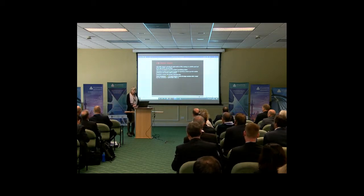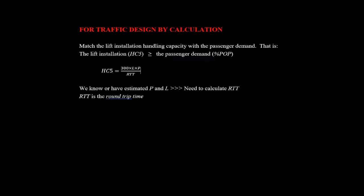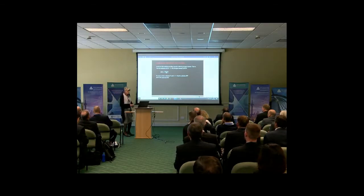As technical editor I know some of what's going to go in there. When we're doing traffic design by calculation, what we're trying to do is match the ability of the lift installation's handling capacity with the passenger demand — we want it to be equal or a bit better. Using that equation, if we know the number of people in the car and the number of lifts, we can design the system to meet that demand.